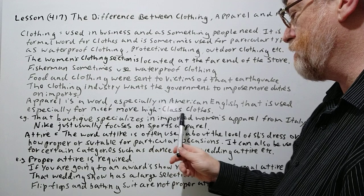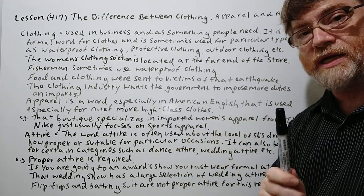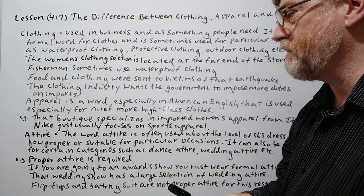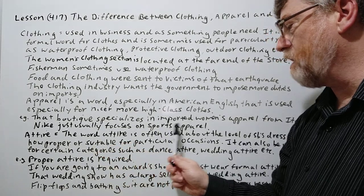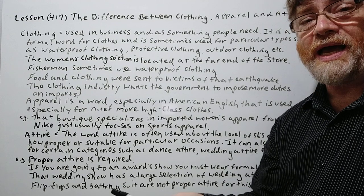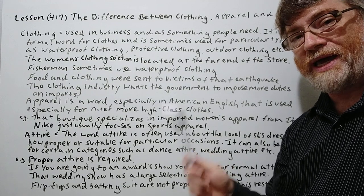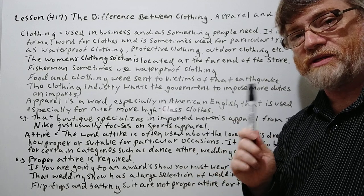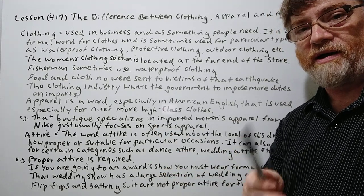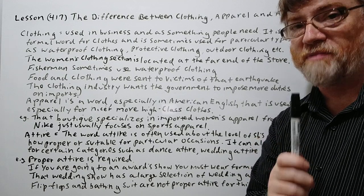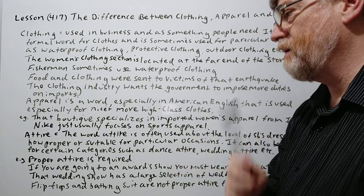Here are some examples: 'That boutique specializes in imported women's apparel from Italy' — again, making it sound more expensive. 'Nike just usually focuses on sports apparel.' Nike tries to make itself appear more high-class and has higher prices on their sportswear than other companies, so they might use the word apparel for that reason.